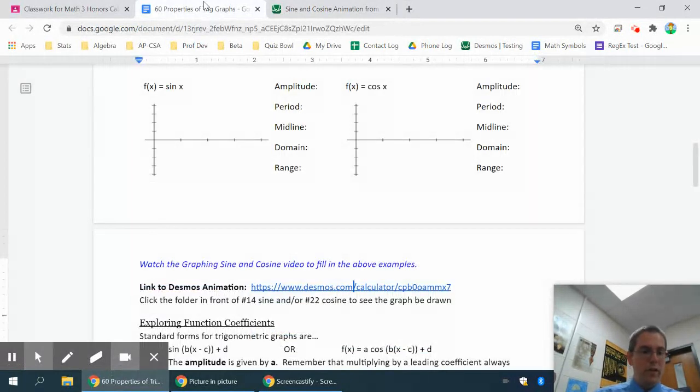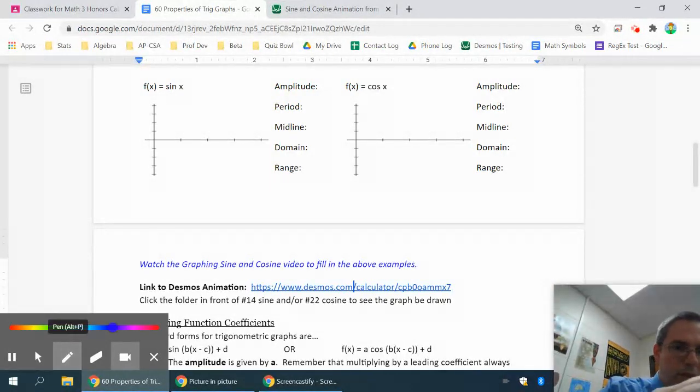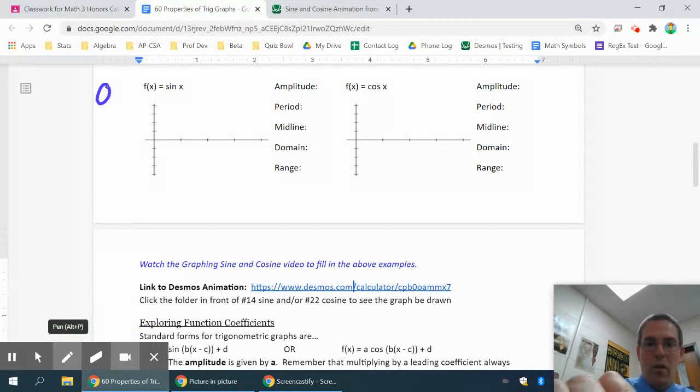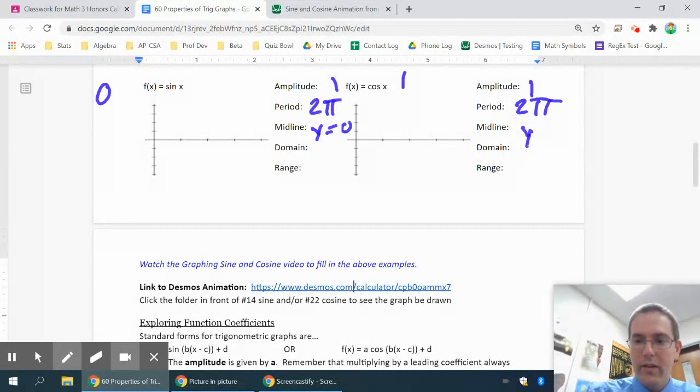Regardless of whether you understand why the graph looks the way it does, it's important to realize that a sine graph always starts at 0, and a cosine graph always starts at 1 for your beginning value. Your amplitude for both is 1, your standard period is 2π—we usually talk about sine and cosine in terms of radians since it keeps our period smaller, from 0 to 2π instead of 360 degrees. The midline is y equals 0, which is the x-axis. The domain is all real numbers, and the range is from negative 1 to positive 1.